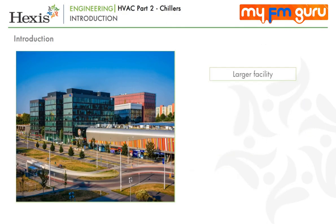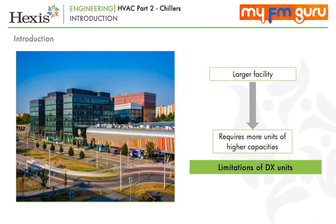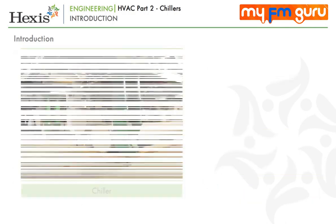Now consider a slightly larger facility to be cooled, for example an auditorium or a floor comprising multiple offices. In such a case, we will have to install more units of higher capacities to cool the larger area. DX units have a limitation on the length of piping that can be used due to issues of pressure drop and thermal losses. Hence, we cannot have one unit serving too many or faraway indoor units. Also, the amount of refrigerant used increases with the number of units or long piping.